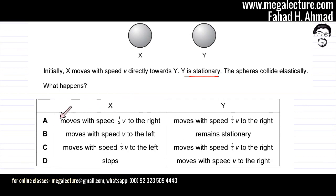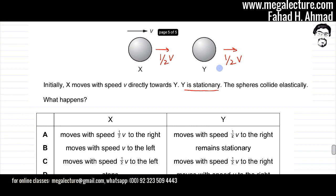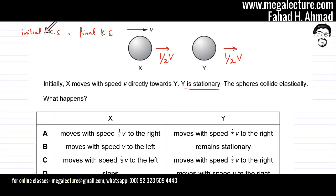Option A states that X moves with speed half V to the right, and Y also moves with speed half V to the right. Since it's an elastic collision, the initial kinetic energy and the final kinetic energy must be equal.